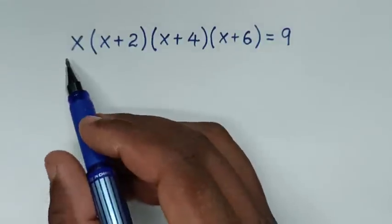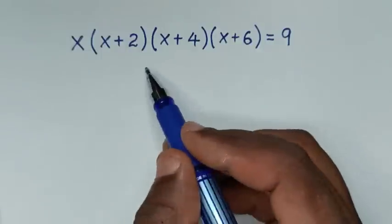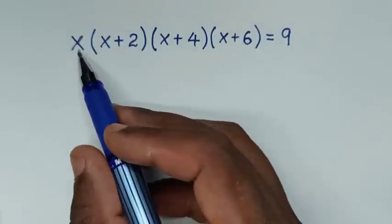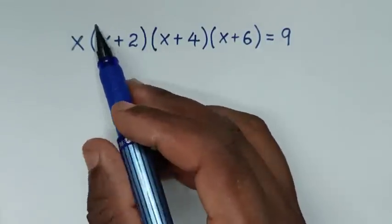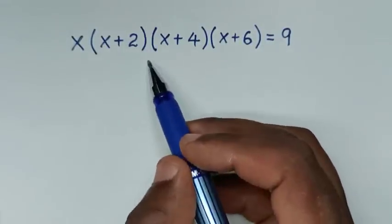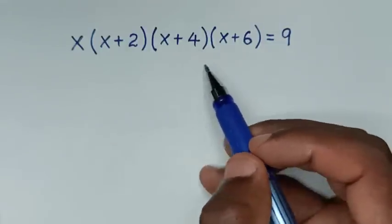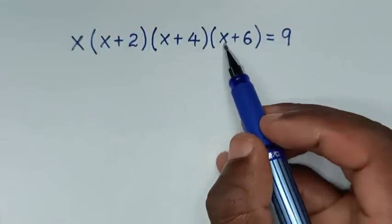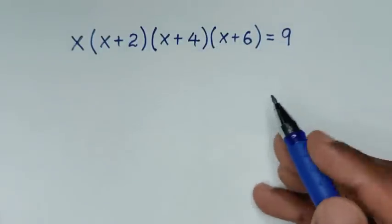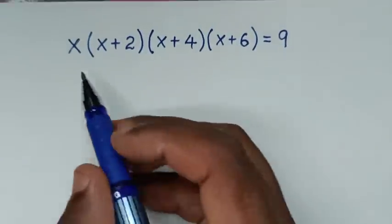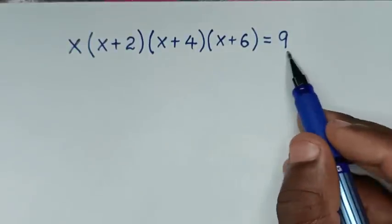Welcome. We are going to solve the math problem: x times (x+2) times (x+4) times (x+6) equals 9 — finding the values of x from this equation.